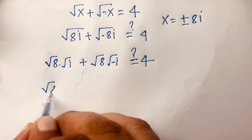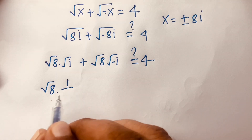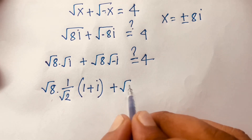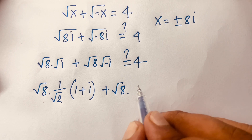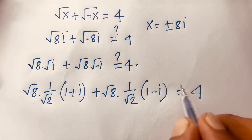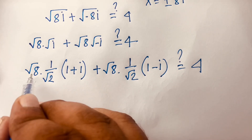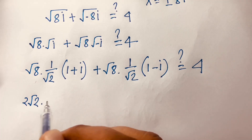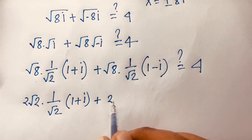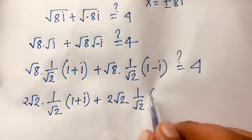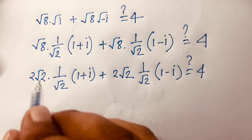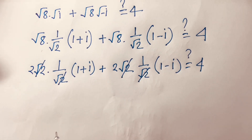We know that square root of i equals 1 over square root of 2 times (1 + i), and square root of minus i equals 1 over square root 2 times (1 - i). So the expression becomes 2√2 times 1 over √2 times (1 + i), plus 2√2 times 1 over √2 times (1 - i), equal to 4. The square root 2 terms cancel.